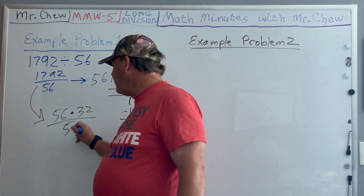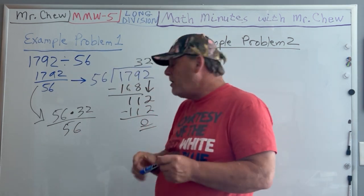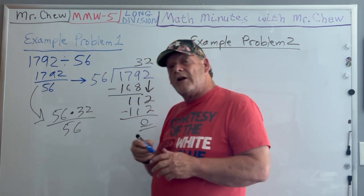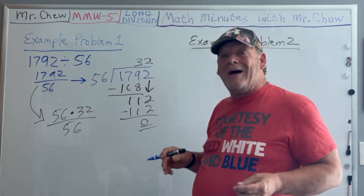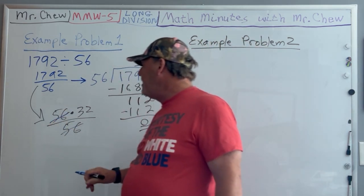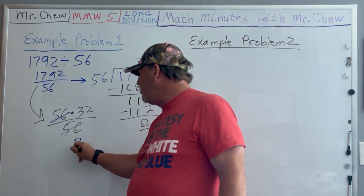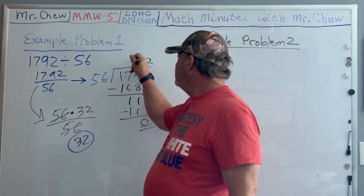So this actually equals 56 times 32 over 56. Remember, if you have the same number in the numerator and denominator, you can divide by that common factor—some teachers call it canceling—and you get your 32.